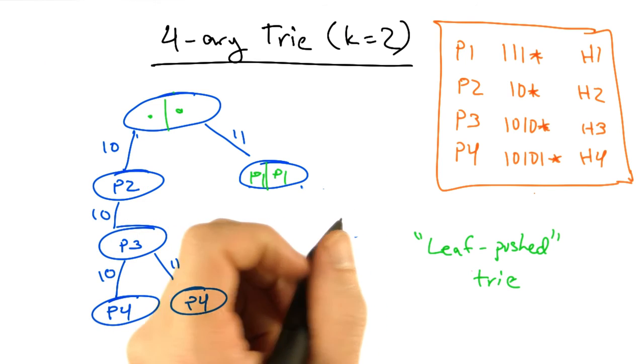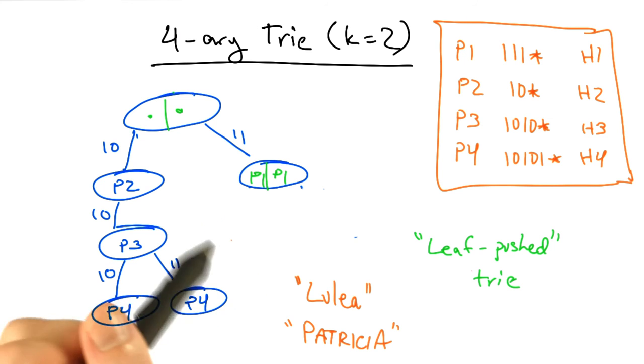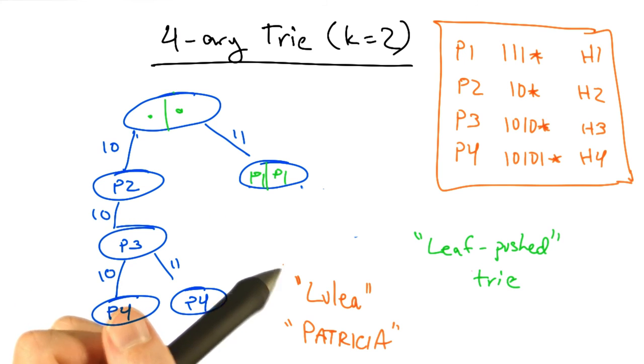There are a variety of other optimization algorithms, including one called Lulea, and another called Patricia. Each of them use the same basic idea that we've explored here, except some of them, like Lulea, are a three-level trie.